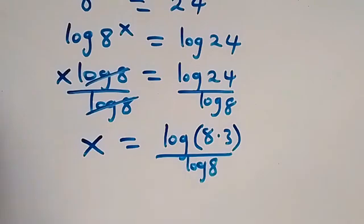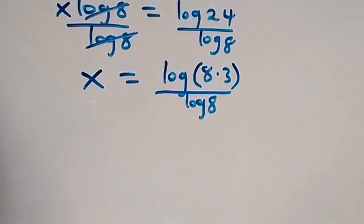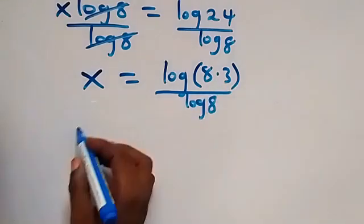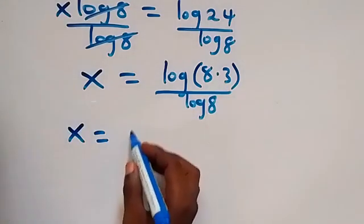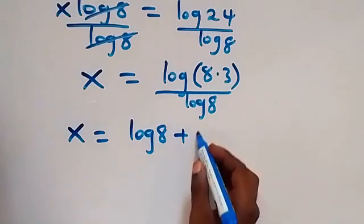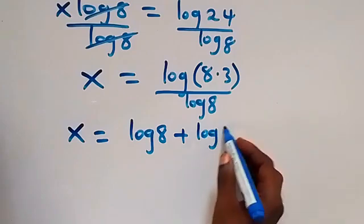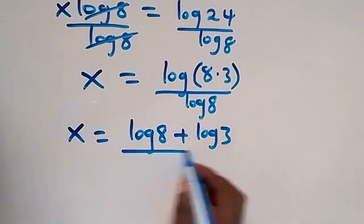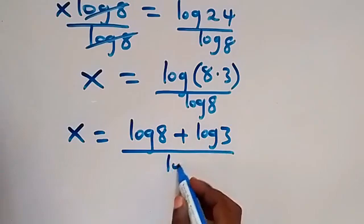From the law of logarithms, we can separate this as x equals log 8 plus log 3. Separate that into 2 logs with addition, all over log 8.